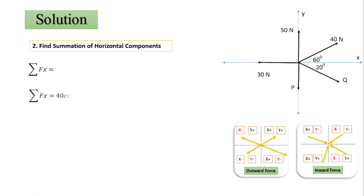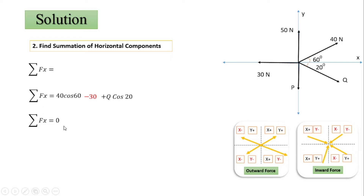Writing the ΣFx equation: the 40 N force is inclined, so its horizontal component is 40 cos 60°. The 50 N force is vertical, so its horizontal component is zero — skip it. The 30 N force is horizontal, so we write −30 N (pointing left). The force P is vertical, so its horizontal component is zero. The force Q has horizontal component Q cos 20°, and since Q is in the fourth quadrant, the x-component is positive.